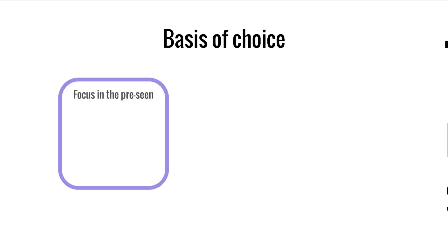We'll start by looking at the basis of the choice — where did these likely issues come from? For starters, we look at the focus in the pre-seen. If something has been regularly mentioned throughout the pre-seen, such as specific risks or opportunities mentioned repeatedly, that suggests the examiner is thinking of asking a question related to that. That's why they've brought it up time and time again.